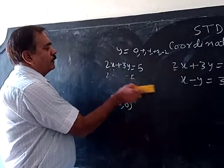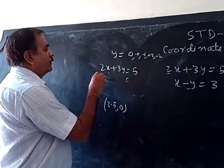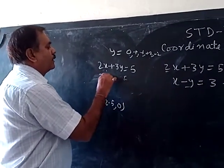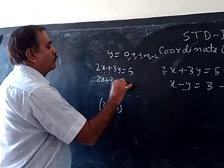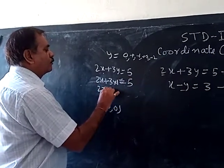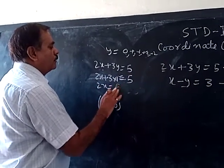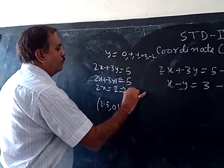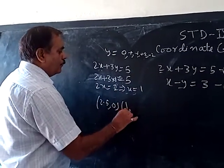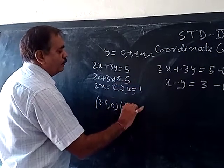For the next value, another coordinate. Now we will put y is equal to 1. 2x plus 3 into 1 is equal to 5. 2x is equal to 2, x is equal to 1. Another coordinate is (1, 1).